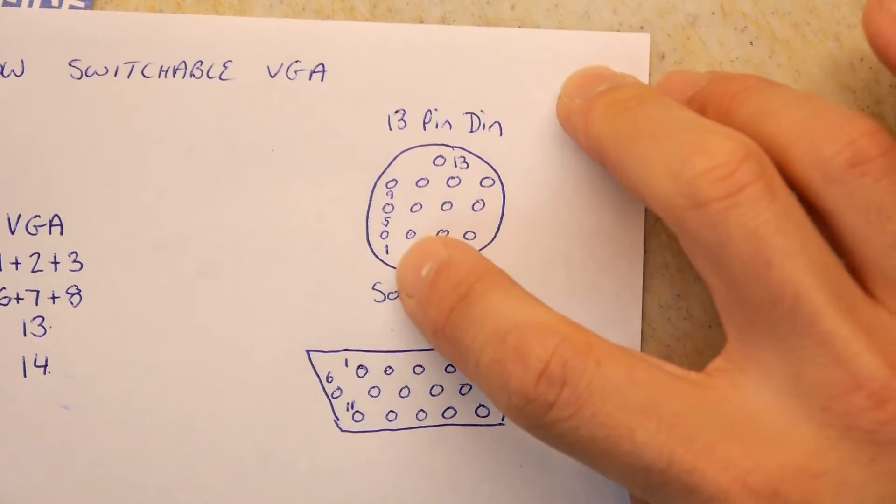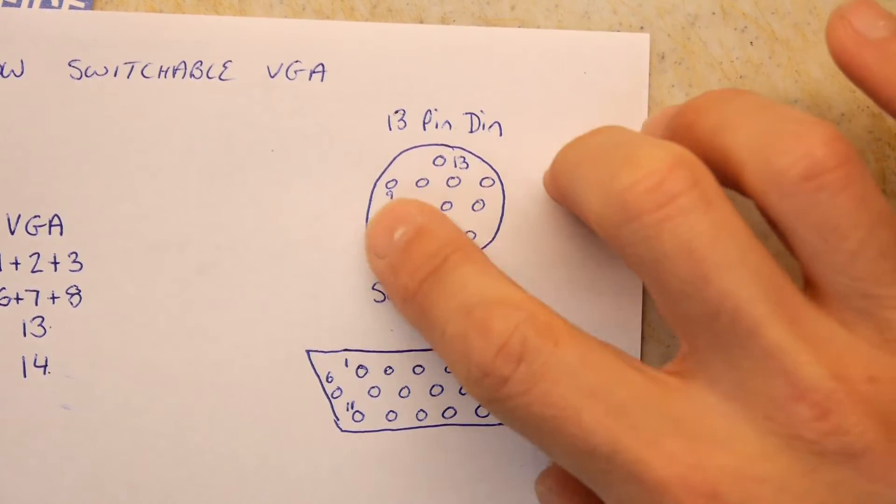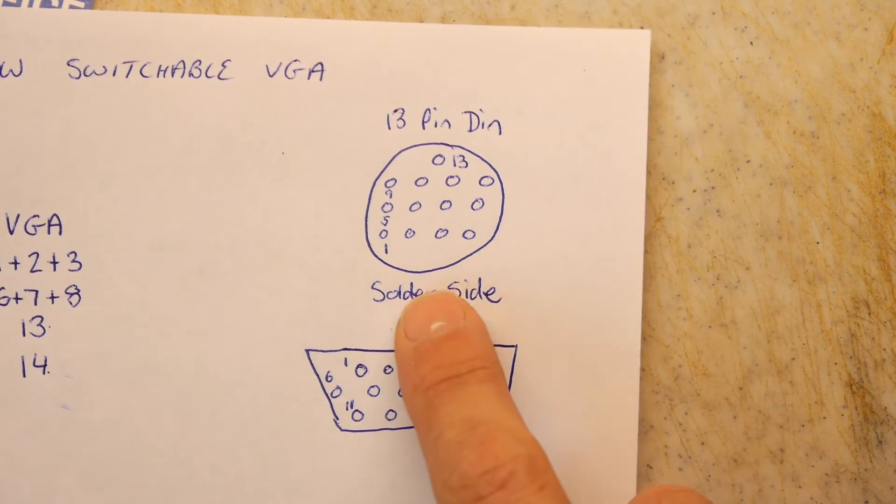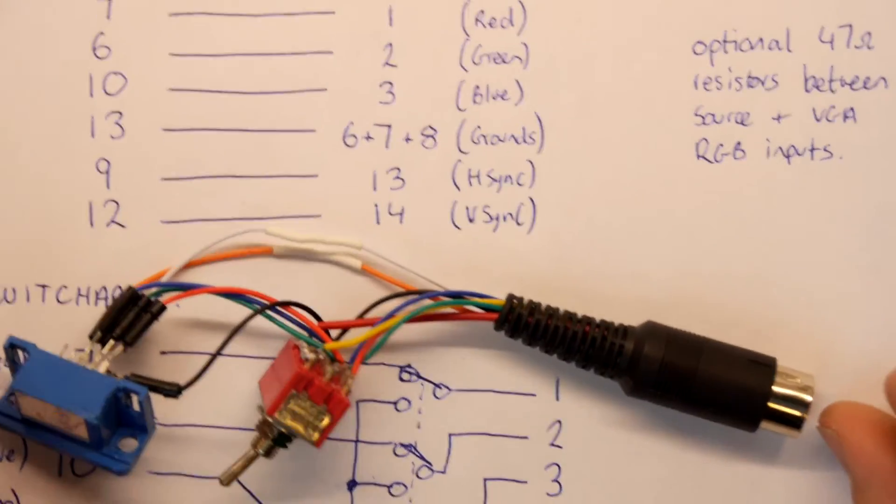So look here, you've got your pin 13 up here. 1, 5, and 9. So 1, 2, 3, 4, 5, 6, 7, 8, 9, 10, 11, 12, 13. And then pins 1 to 5, 6 to 10, 11 to 15. Solder side, remember. Go make it. Enjoy your Atari ST.